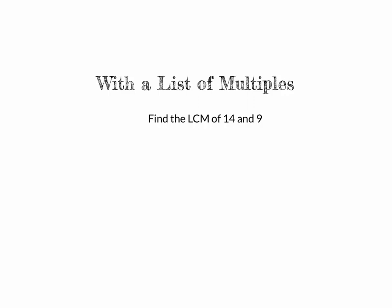When finding the LCM using a list of multiples, I'll start with 9 since it's the smaller number. Nine times 1 is 9, nine times 2 is 18, nine times 3 is 27, nine times 4 is 36, nine times 5 is 45. I like to start with the first five multiples of each number.